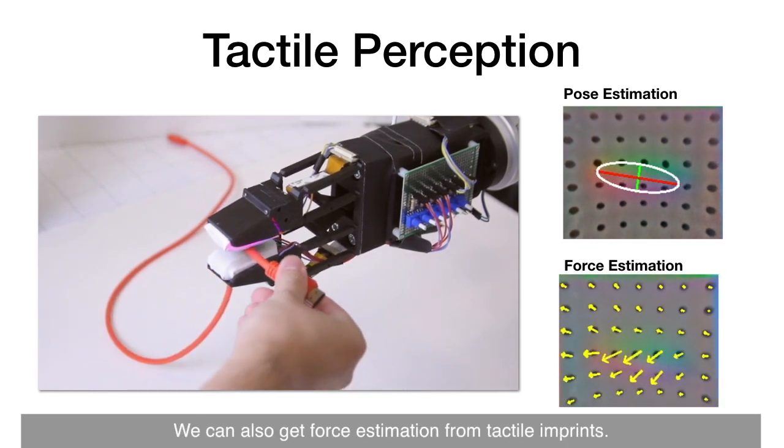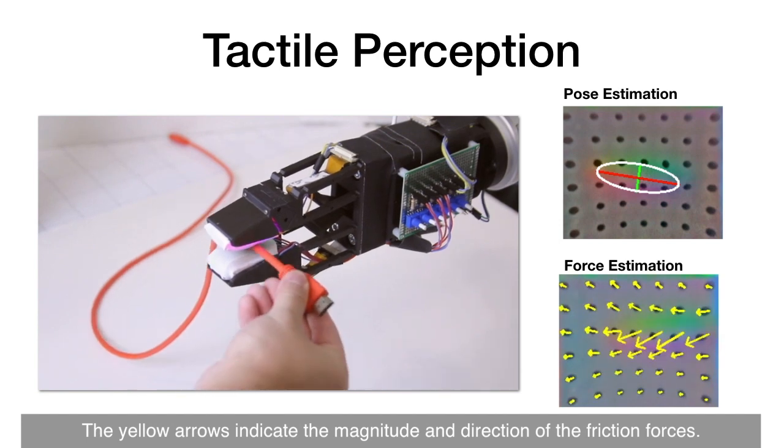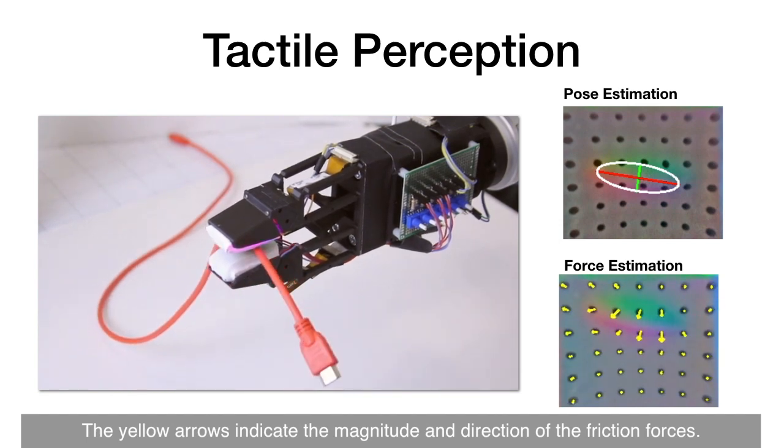We can also get force estimation from tactile imprints. The yellow arrows indicate the magnitude and direction of the friction forces.